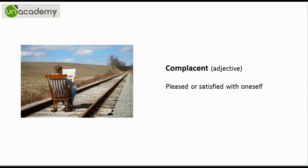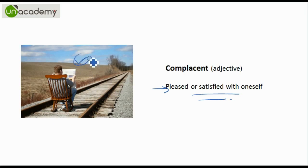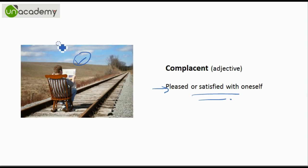Next we have Complacent. Complacent means to be pleased or satisfied with oneself. This picture is very interesting — this person is sitting on the railway tracks. He is very satisfied with the state of the universe right now and is not in a mood to think of the future. He is very satisfied with oneself, but what if a train comes? That is not in his mind. So this photo may help you relate to the word complacent.